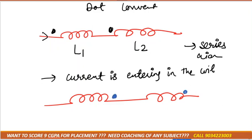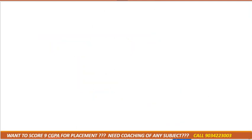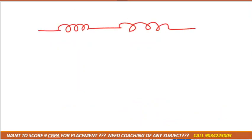Another case: if there are two inductors and both currents are leaving, that is also a series aiding connection. In this case, the formula for L equivalent is L1 plus L2 plus the mutual inductance, which is 2M.